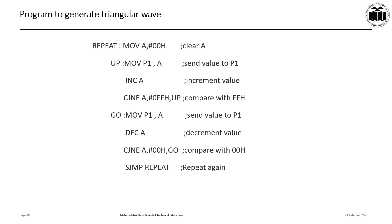The instruction CJNE A, #0FFH, UP compares the value in A with the maximum value 0FFH. As the value in A is not equal to 0FFH, the program control jumps to the label UP, where again the value in A — which is now 01H — is sent to Port 1. Again, the INC A instruction increments the value by 1, and this process is repeated continuously till the value in A becomes equal to 0FFH. When the value in A becomes equal to 0FFH, the CJNE instruction transfers program control to the next line, which is MOV P1, A. So the value 0FFH is sent to Port 1, and as a result, the DAC generates the maximum output voltage of plus 5 volts.